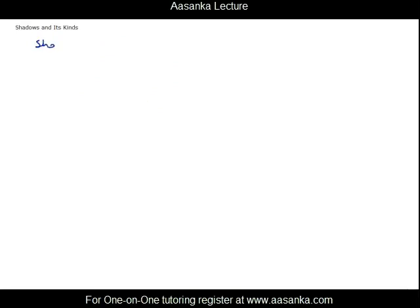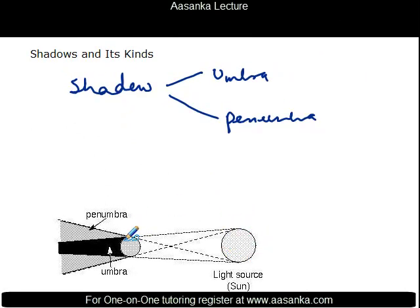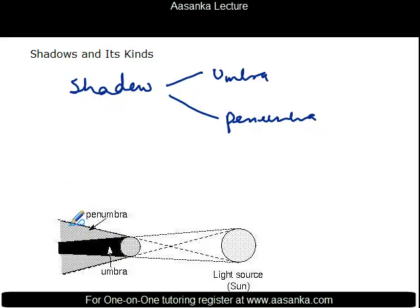We see that a shadow consists of two regions. One is called Umbra, the other Penumbra. To understand this in detail, let's look at a figure. Here you have a light source — the sun — and an object. The total dark region shown in black is called Umbra. Outside of this, the region of partial darkness that surrounds the Umbra is called Penumbra.